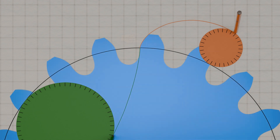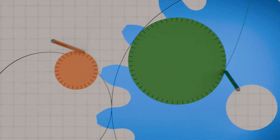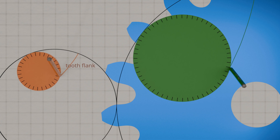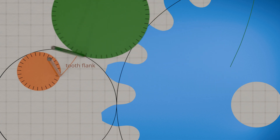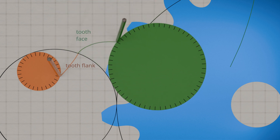In cycloidal gears, the tooth face is designed using the epicycloid and the tooth flank using the hypocycloid. The rolling circle used to construct the hypocycloid is not usually the same as the rolling circle used to construct the epicycloid, meaning different rolling circles are used. To ensure that the teeth of two cycloidal gears mesh correctly, the outer rolling circle for the design of the tooth face of one gear is used as the inner rolling circle for the design of the tooth flank of the opposite gear.